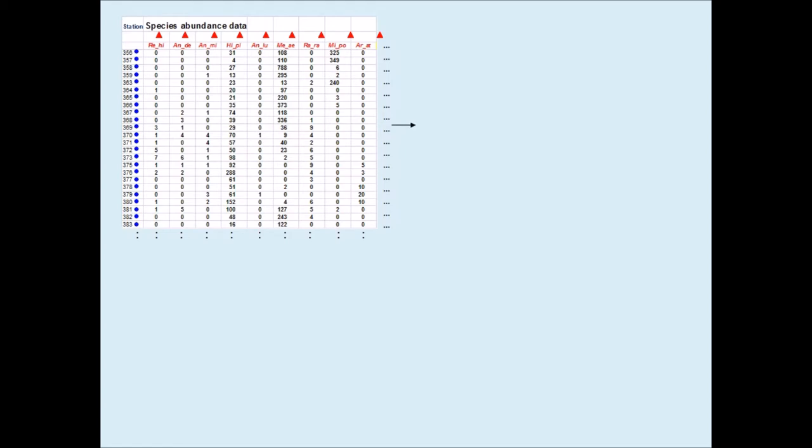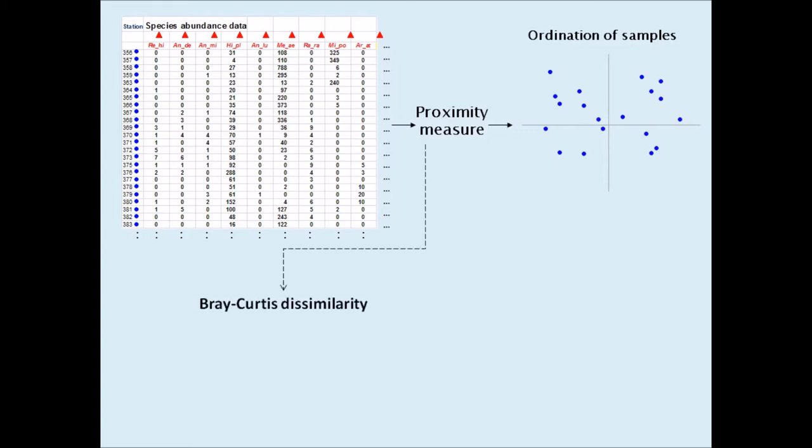Ordination methods depend on the proximity function that is chosen by the researcher to quantify differences between samples. The two most popular choices are the so-called Bray-Curtis dissimilarity and the chi-square distance, with the choice generally depending on which school of thought the researcher comes from.